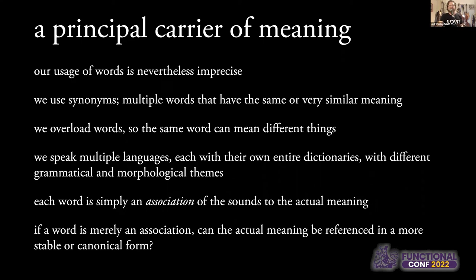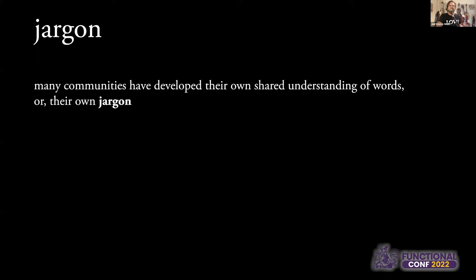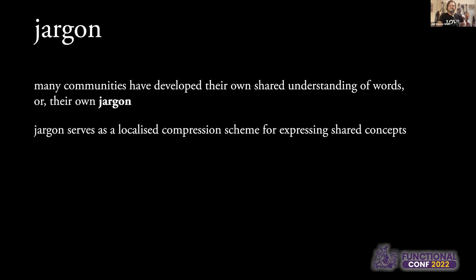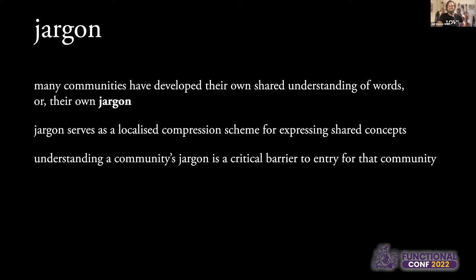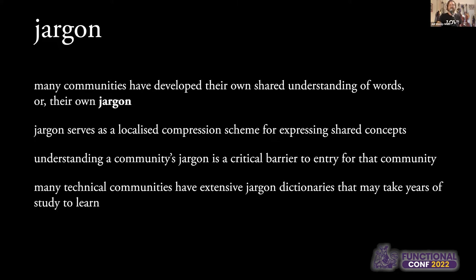And if a word is merely an association, can the actual meaning be referenced in a more stable or canonical form? This is a really interesting idea — is there a way that programmers in particular could actually have something that's better than words? Now, every community has jargon: special words that are only meaningful within that community. That's a little localized compression scheme. If you're going to join a community, you need to learn that community's jargon, whether it's acronyms or specific words unique to that particular industry or company. Most technical communities have extensive jargon dictionaries.